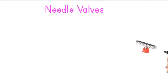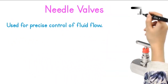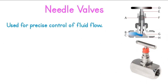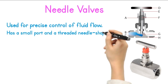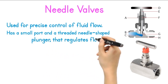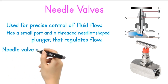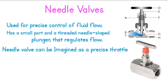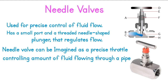Needle valves. A needle valve is used for precise control of fluid flow — it is like a precision instrument. It has a small port and a threaded, needle-shaped plunger that regulates flow. The plunger is typically connected to a handle or stem, allowing fine adjustments. The needle valve can be imagined as a precise throttle, controlling the amount of fluid flowing through a pipe.